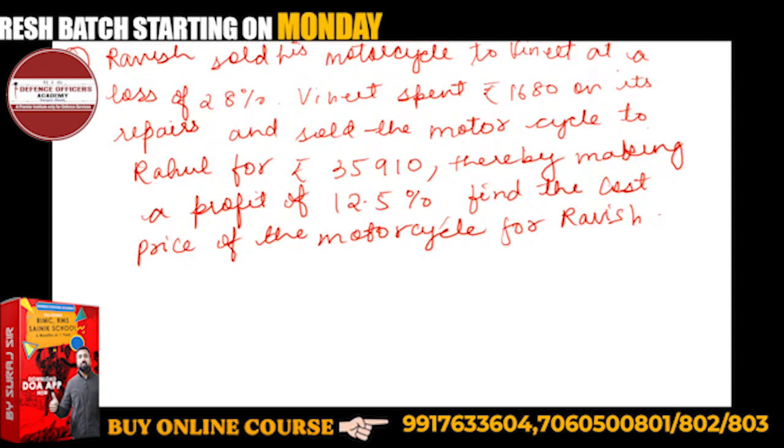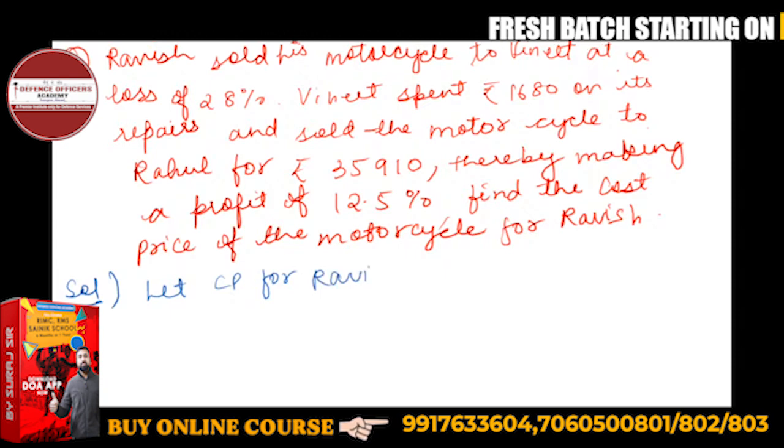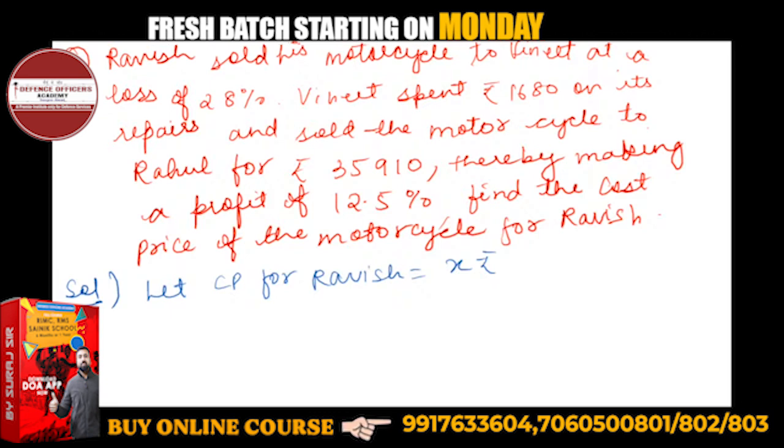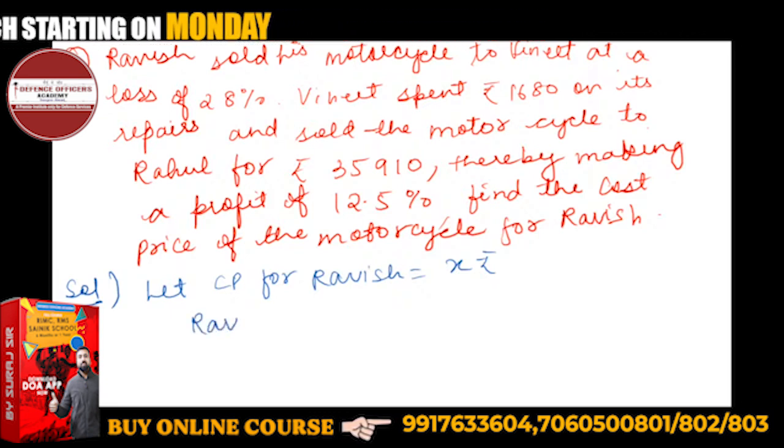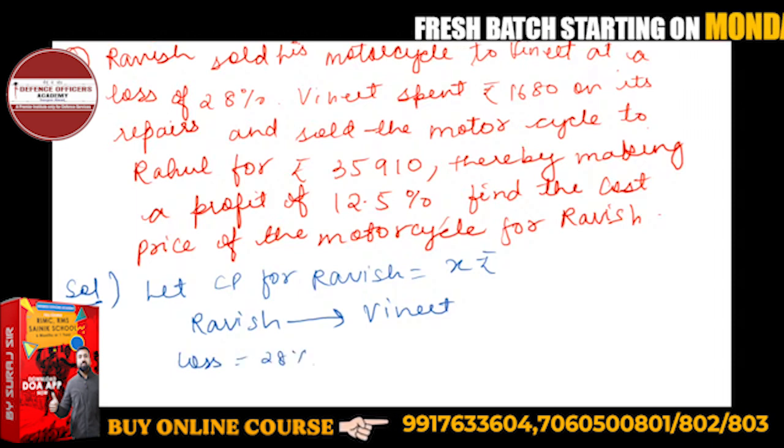Let CP for Ravish is equal to x rupees. We finally have to find it. CP for Ravish, and then he has sold to Vineet. You should know that Ravish sold to Vineet at a loss of 28%. You should know this, that how CP and SP changes from person to person.